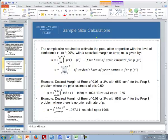So for example, the desired margin of error of 3% or 0.03 with a 95% confidence interval for Prop 8 problem, where the prior estimate of P is 0.60. What we would do is we put in, if we're doing 95%, the critical value is 1.96. We would divide it by the desired margin of error of 3% or 0.03, and we'd square this quantity, times it by our prior estimate of 0.6, times 1 minus our prior estimate of 0.6, and then if we multiply all that together, we get a number of 1,024.43, which we would round up to 1,025.